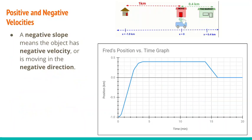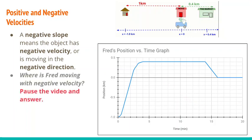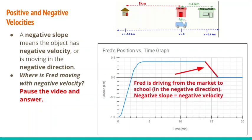A negative slope means the object has a negative velocity or is moving in the negative direction. Fred is moving in the negative direction from 14 minutes until 16 minutes — this is when he's driving from the market back to the school. Negative slope, negative velocity — since he's going in the negative direction, he has a negative velocity.